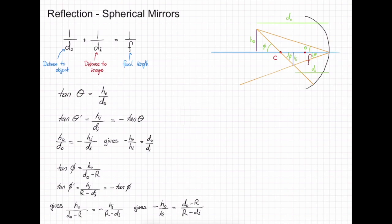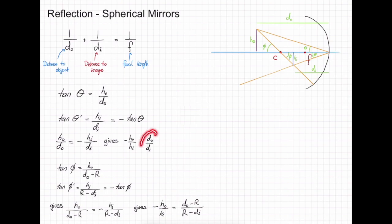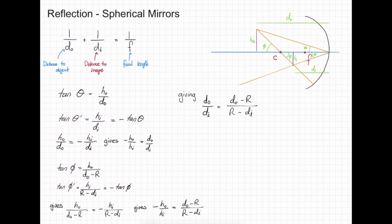Now we have two expressions that are equal to minus HO over HI, so we can equate them. With some algebraic manipulation, we get 2 divided by R equals 1 over DO plus 1 over DI. Substituting in that the radius equals two times the focal length, this simplifies down to give 1 over the focal length equals 1 over the distance the object is away from the mirror plus 1 over the distance the image is away from the mirror.